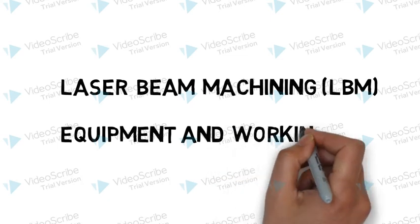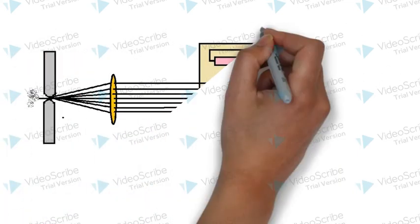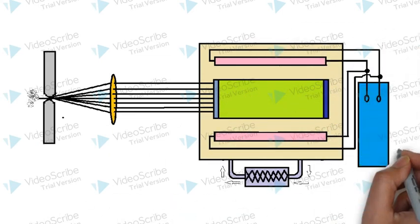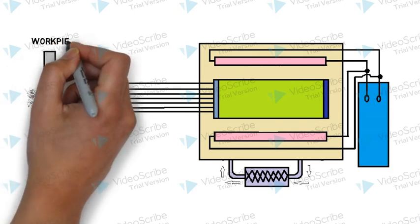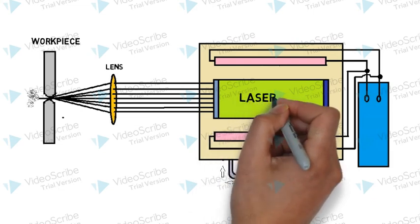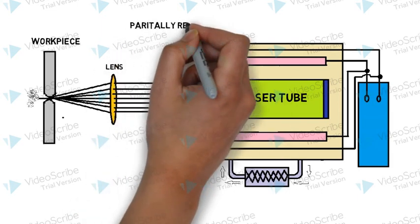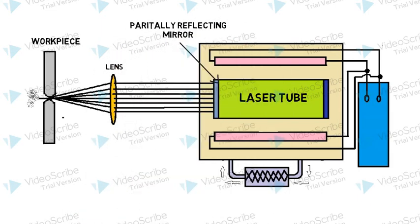This is how a standard setup of laser beam machining looks like. There is a workpiece, then the lens for concentrating the laser beam at one single point, then the laser tube which we have just learned. It is fitted with partially reflecting mirror surface on one side and completely reflecting mirror surface on the other side.